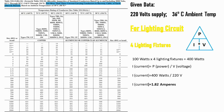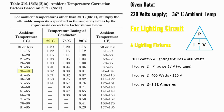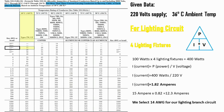From the table, we select the 60°C conductor temperature rating — moisture-resistant thermoplastic conductor. 1.82 amperes fits within the 15-ampacity rating for 14 AWG wire. But with a 36°C ambient temperature, the correction factor is 0.82. So: 15 × 0.82 = 12.3 amperes. Thus, 14 AWG wire is still safe to use.